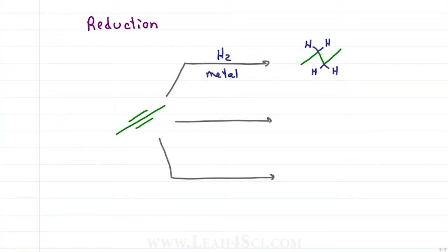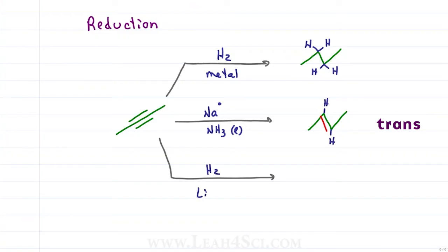For a partial reduction we have dissolving metal reduction, using sodium or lithium in liquid ammonia (non-ionic or radical conditions), to give us a trans-alkene. Alternatively, if we react the alkyne with H2 and Lindlar's catalyst, we get another partial reduction that gives us a cis-alkene.